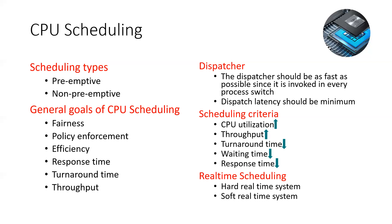The goal is that our throughput should be more — in one unit of time, multiple processes should be executed. Turnaround time should be as short as possible from when a process starts to when it reaches termination state. We need to minimize waiting time and minimize response time for dispatch. We have two types: hard real-time scheduling and soft real-time scheduling.